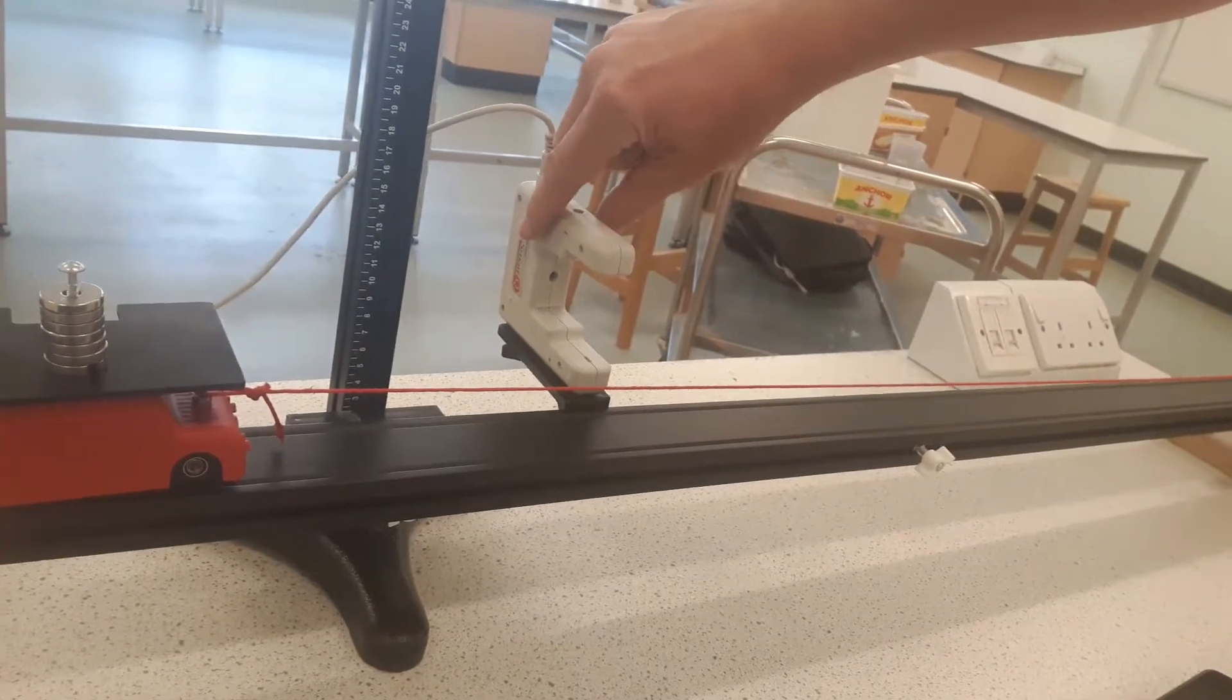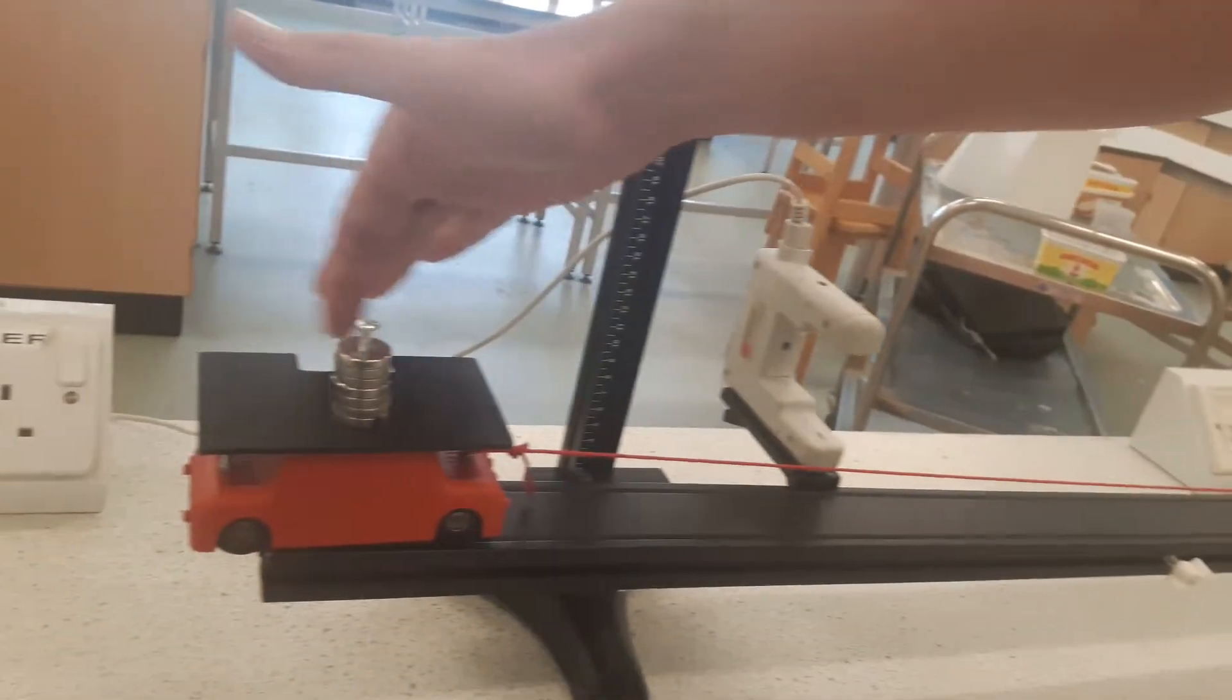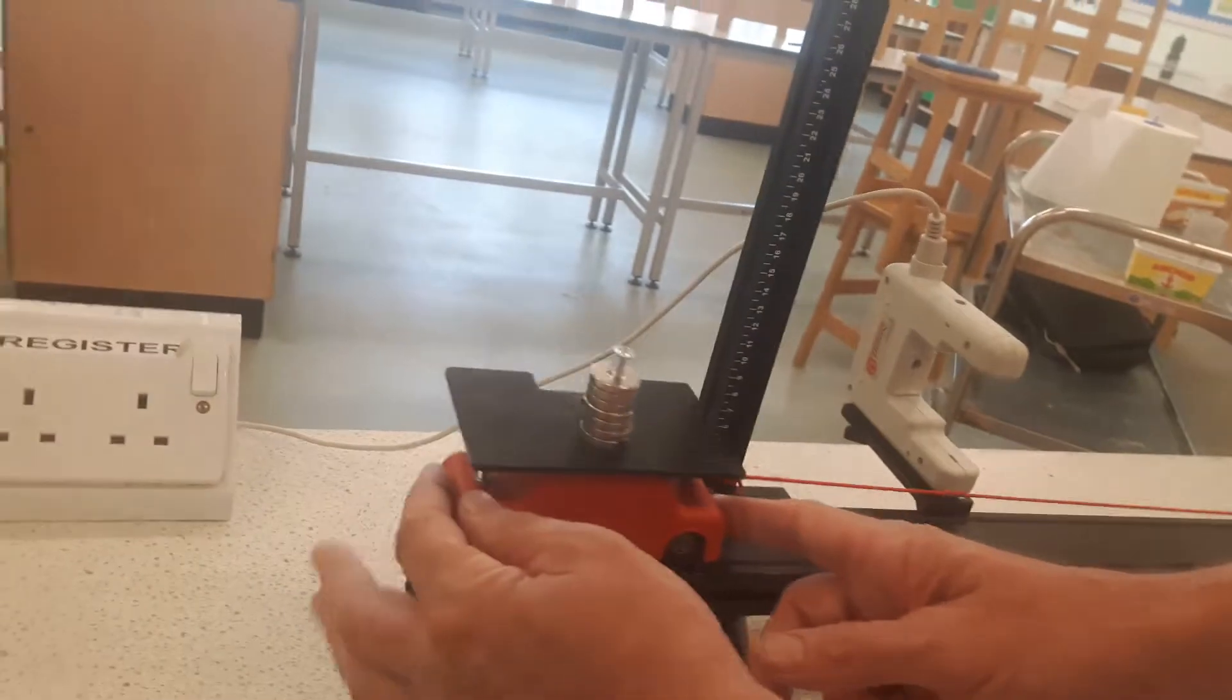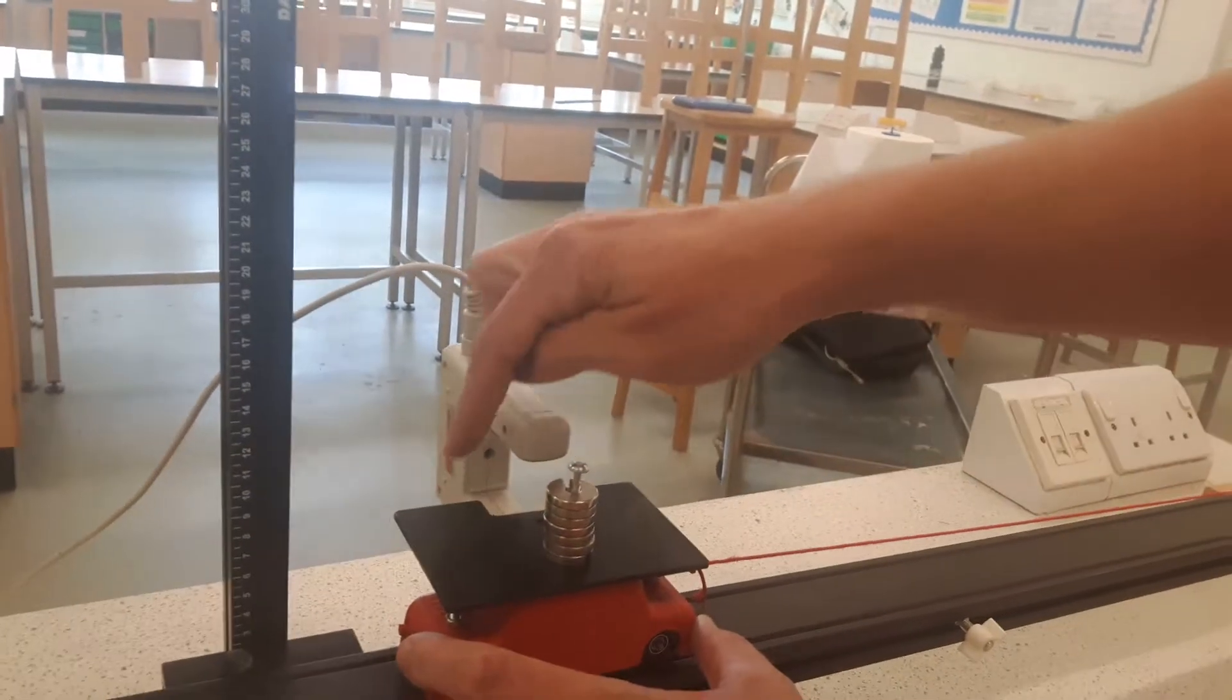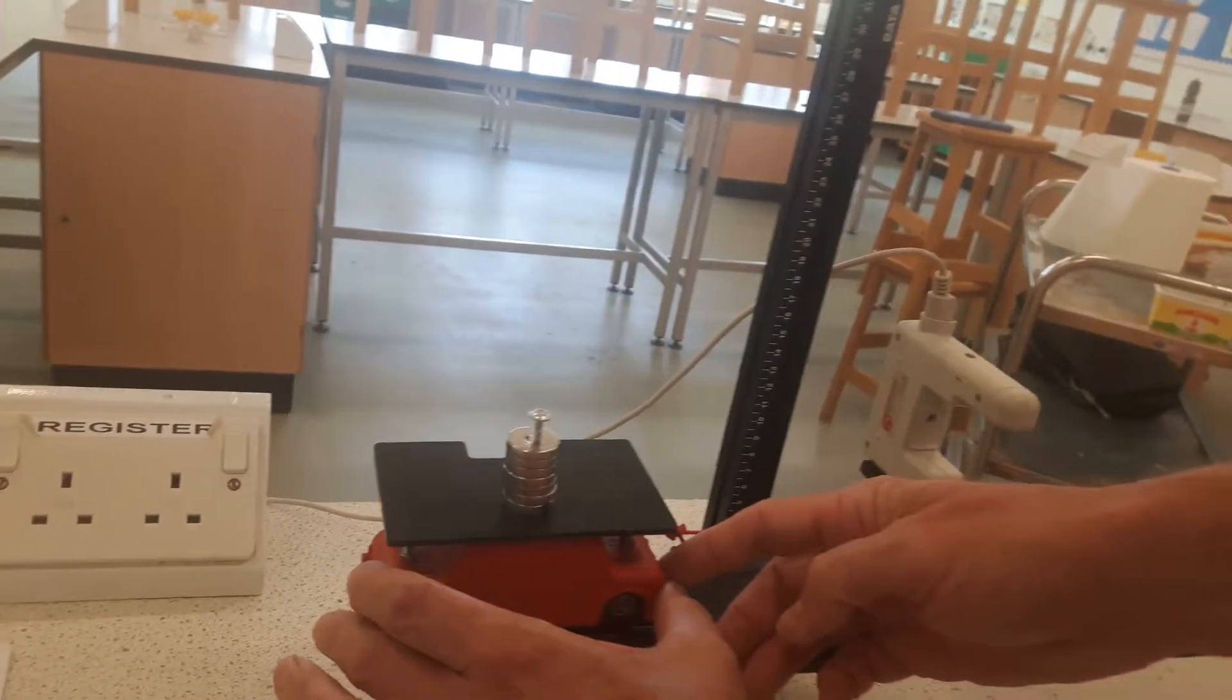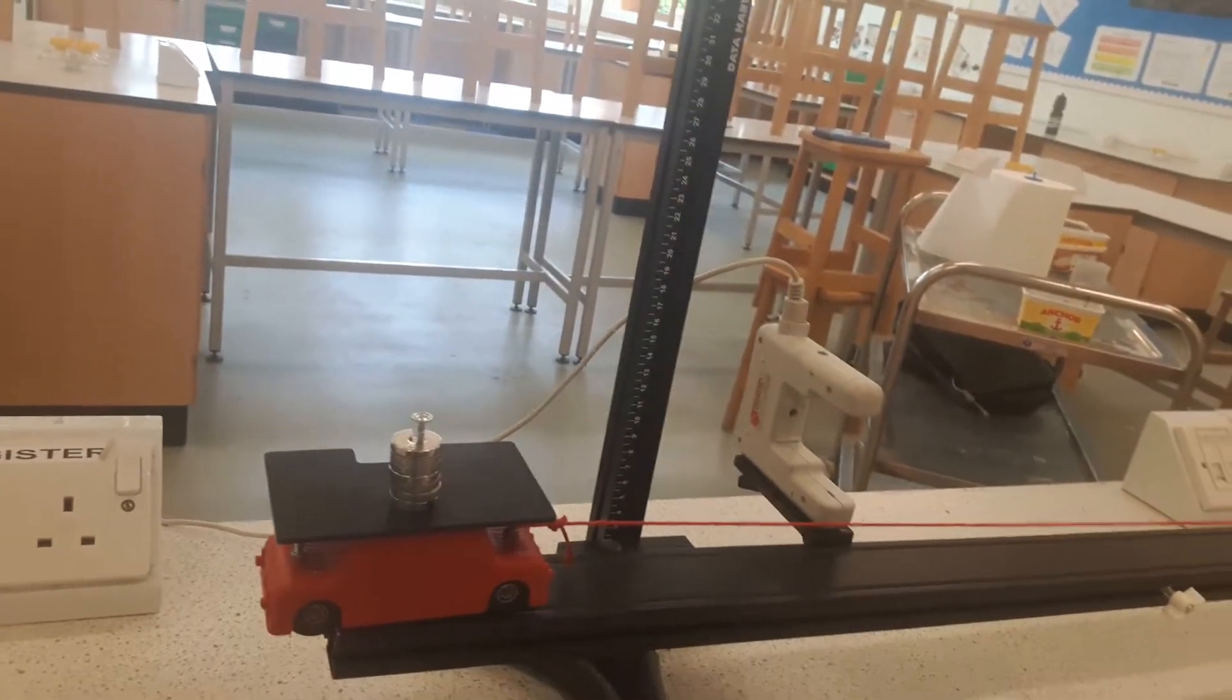The light gate is a device that's going to interact with these two parts of the double interrupt card. If you look closely, as the trolley passes through the light gate it blocks off the light once and then twice, and that enables the laptop, which is connected to this cable, to measure the acceleration.